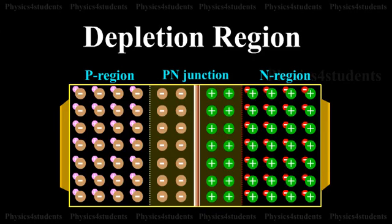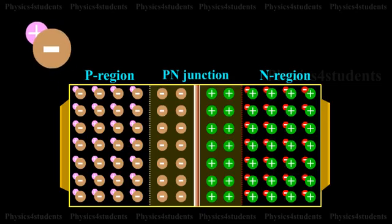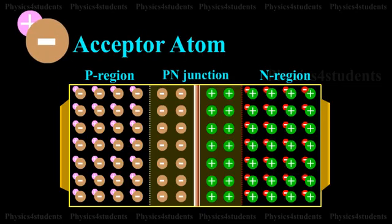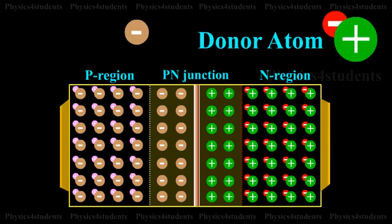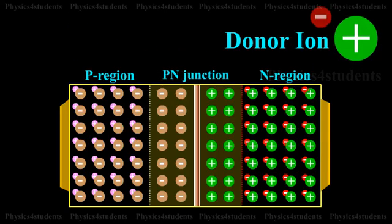In this region, on the left side of the junction the acceptor atoms become negative ions, and on the right side of the junction the donor atoms become positive ions.